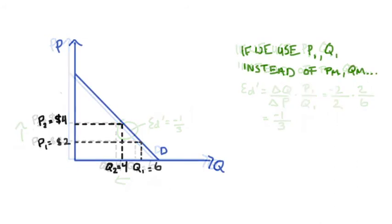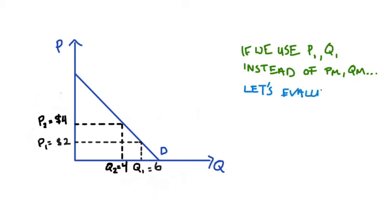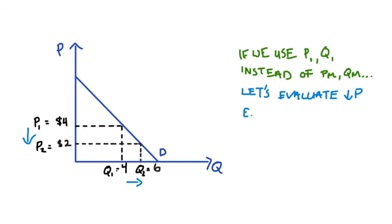So what I'm going to think of, what happens if we work with the same region of the demand curve, but we're going to evaluate a decrease in the price from $4 to $2. And this essentially means that we're swapping the positions of P1, P2, Q1, and Q2. So we're decreasing the price from 4 to 2, which gives us an increase in the quantity from 4 to 6.